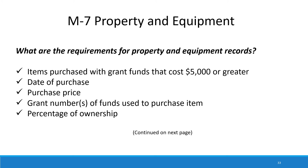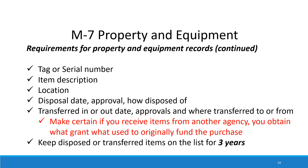The requirements for tracking property and equipment are that items purchased with grant funds costing $5,000 or greater must be tracked, including the date of purchase, the purchase price, the grant number(s) of funds used and the percentage of ownership. Additional required tracking items include the tag or serial number, item description, location, disposal date, approval for disposal and how the item was disposed of, transferred-in or out date with appropriate approvals, and where the item was transferred to or received from. If you receive items from another agency, obtain what grant was used to originally fund the purchase.